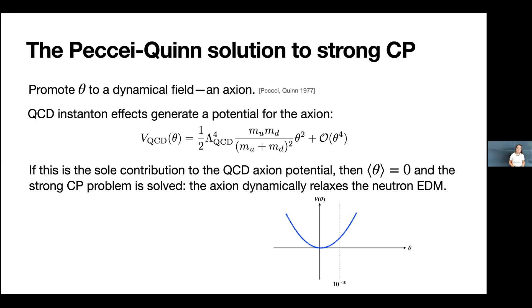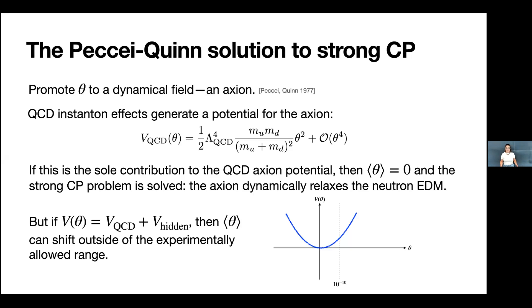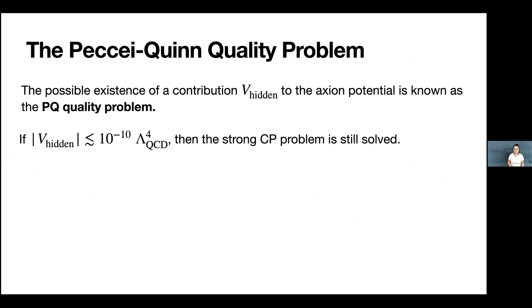The most viable solution to the strong CP problem is the Peccei-Quinn solution. This mechanism involves promoting the parameter theta to a dynamical field known as an axion. QCD instanton effects generate a potential for this axion that depends on lambda_QCD to the fourth, with an order-one coefficient in terms of the quark masses, times theta squared. If this V_QCD is the only contribution to the axion potential, the axion dynamically relaxes to zero and the strong CP problem is solved.